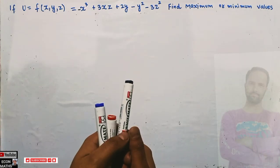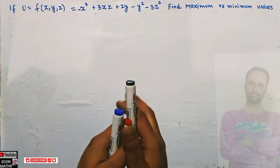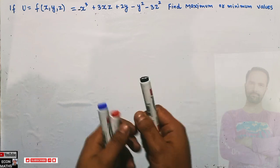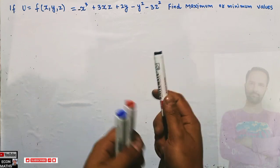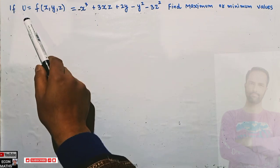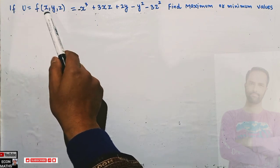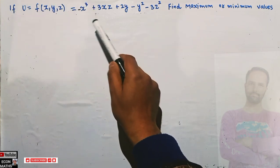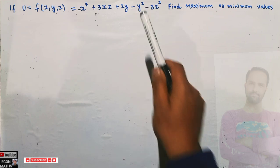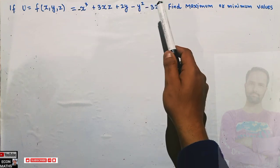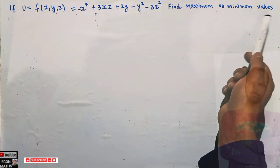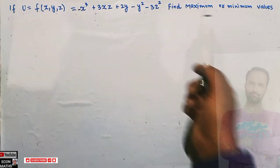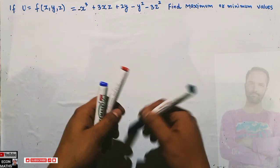In this video we will try to solve a problem on optimization of three variables that was asked by a person on the Telegram channel of Econ Maths. The question is: if u = f(x,y,z) = -x³ + 3xz + 2y - y² - 3z², find the maximum or minimum values. We have to optimize this function.